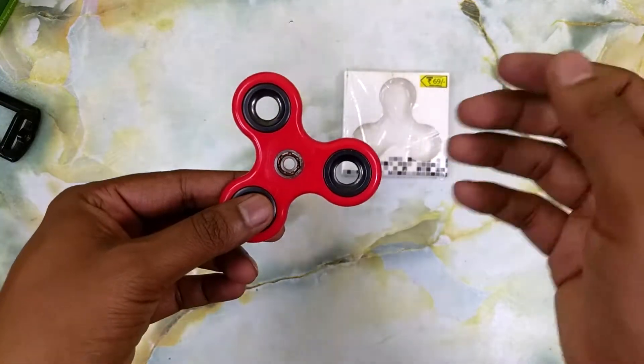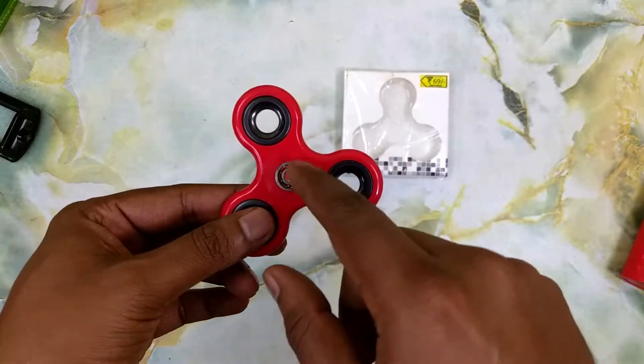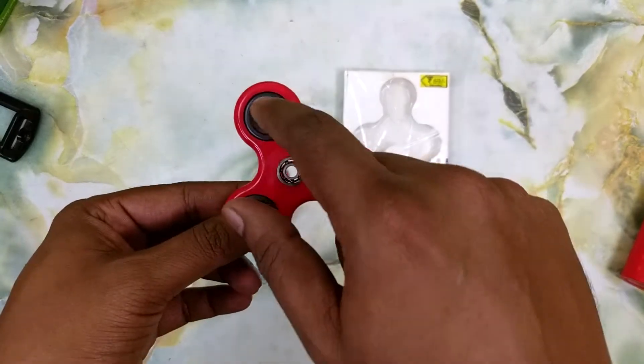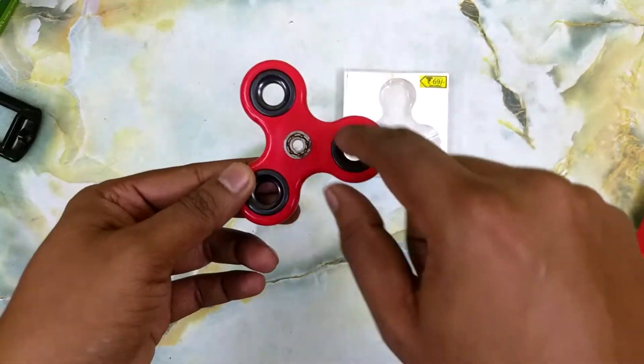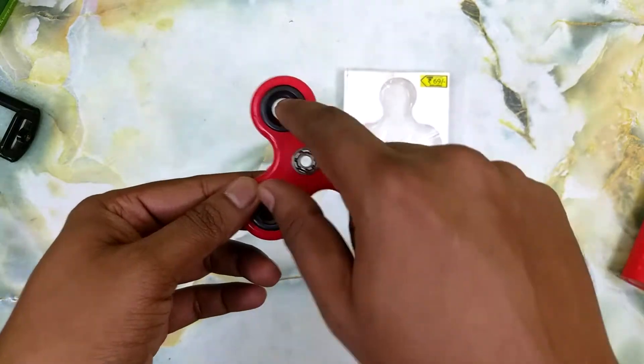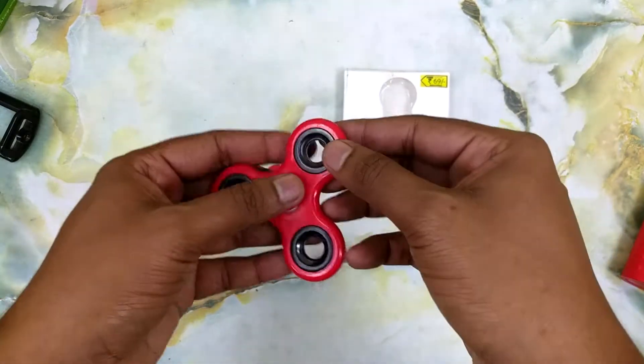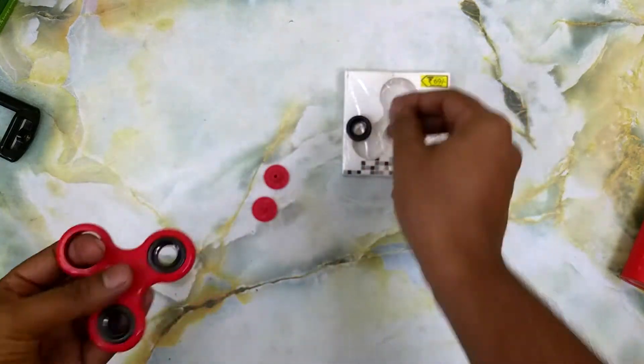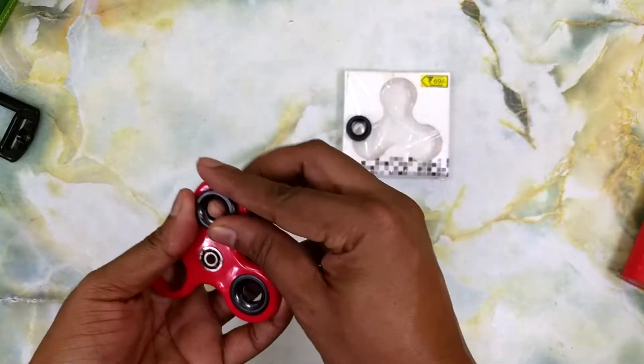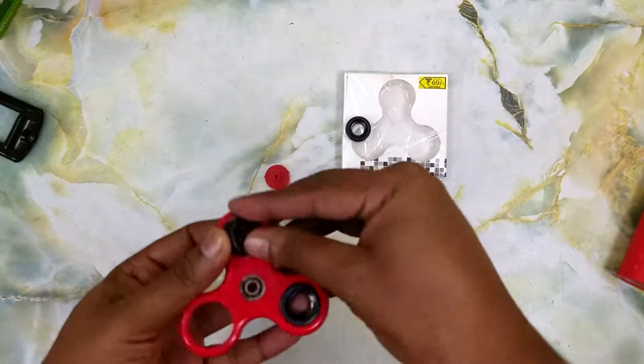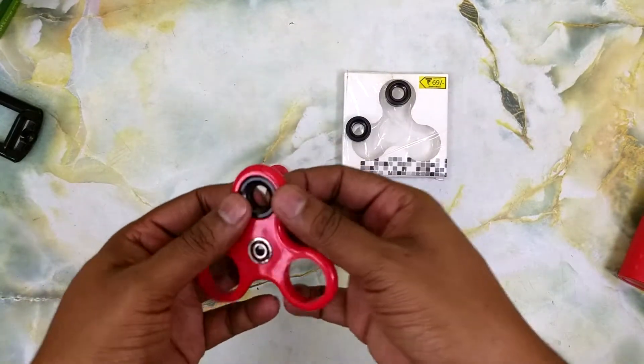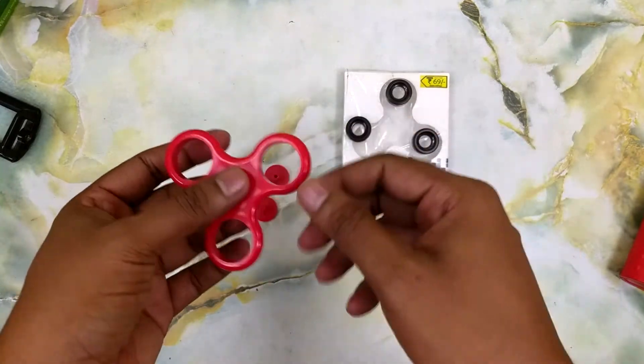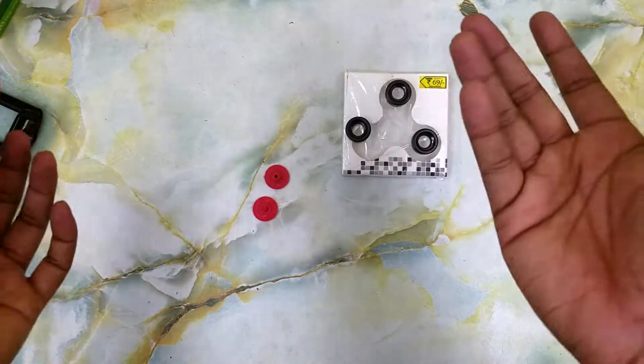Well they're selling it for 69 because they cheaped out on a smaller ball bearing and no ball bearings at these three ends. These are just counterweights which will also pop out. So all of these counterweights are going to pop out. And once the counterweights are out, since there is no weight, it doesn't spin as well even with the thumb holders.